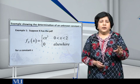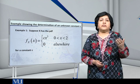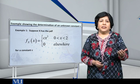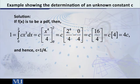It is defined and we are saying it is a PDF, and since c is an unknown constant we want to determine that. We will apply the basic property of a PDF, according to which the integral of f(x) from 0 to 2 in this particular case has to be equal to 1.